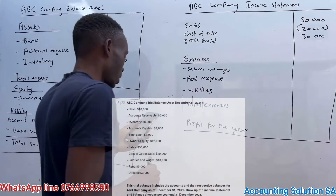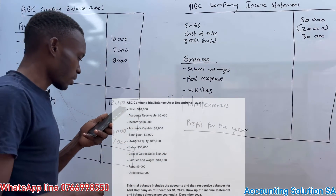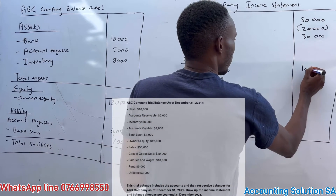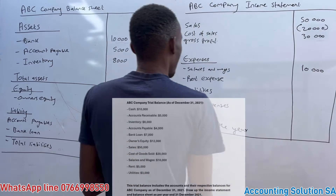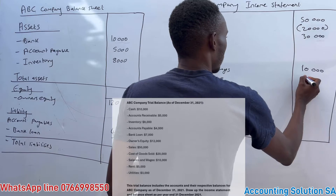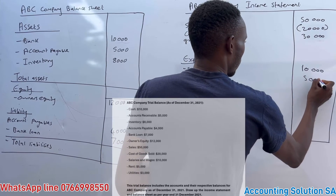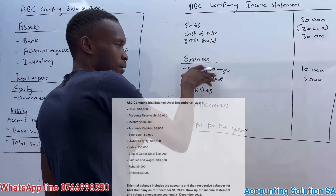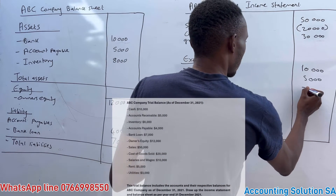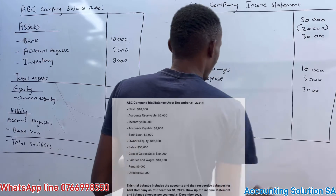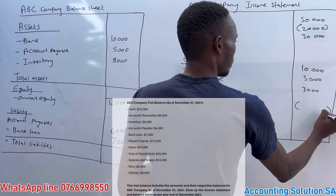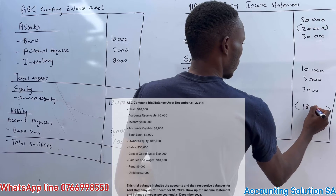Now let's check for expenses. Salaries and wages is an expense of 10,000, rent expense is 5,000, and utilities is also an expense of 3,000. The total of these expenses, shown in brackets, is 18,000.